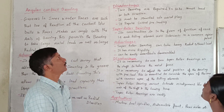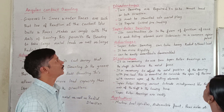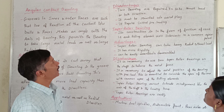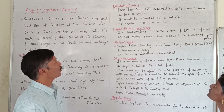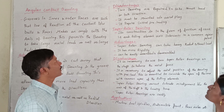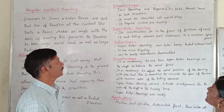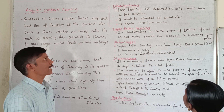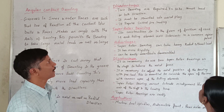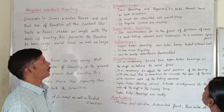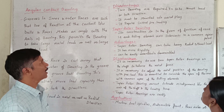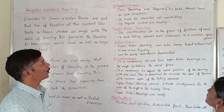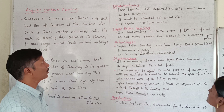Disadvantages of angular contact bearing: two bearings are required to take thrust load in both directions. It must be mounted without axial play, and it requires initial preloading.